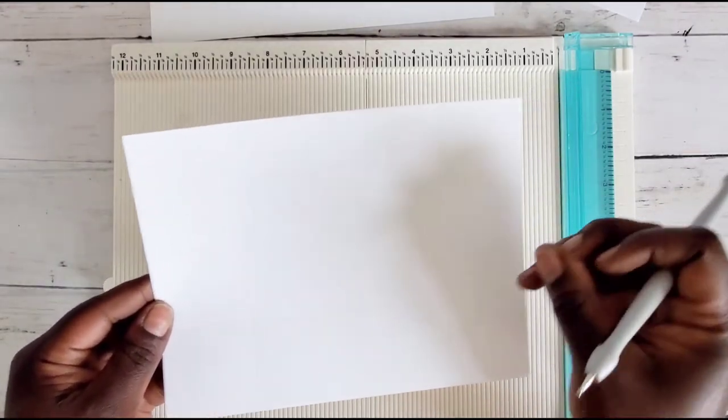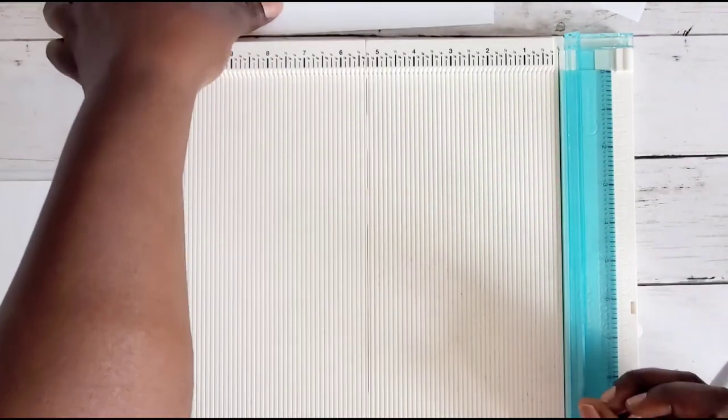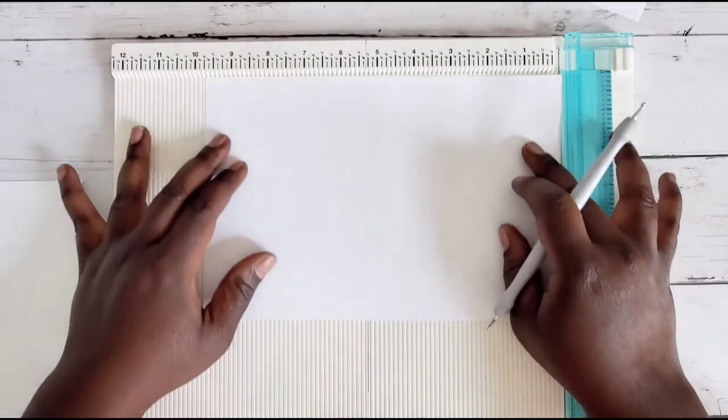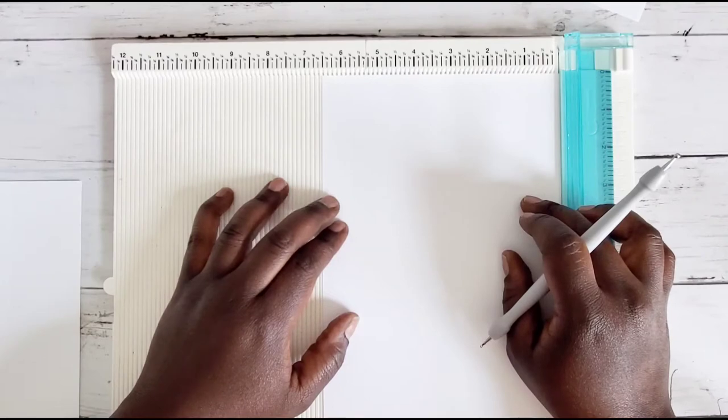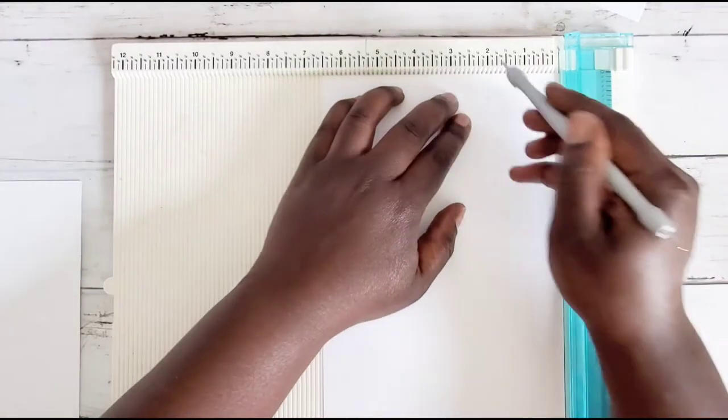Okay, so that is the box for the drawer. Then your next piece you're going to need is one that measures 9.75 by 6.5. And on your 6.5 inch side we are going to score it at 2.